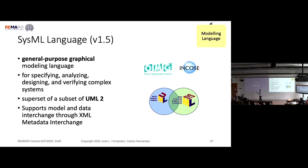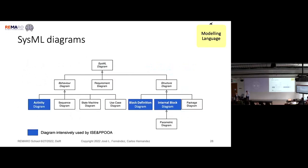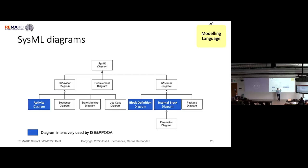There are many SysML diagrams that capture behavior, requirements, and the structure of the system — this is a difference from UML. Those highlighted in blue are the ones we will focus on. We are going to discuss the activity diagram specifically, because it is very interesting for expressing functional flows in the system. You are probably already familiar with class diagrams and component diagrams, which correspond to block definition diagrams and internal block diagrams in SysML.